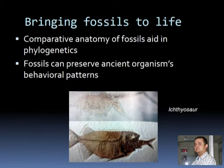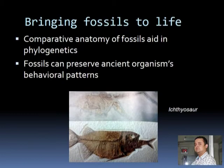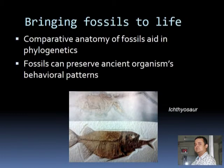Once you have a fossil, how do you analyze it and draw meaningful conclusions? You can do comparative anatomy — simply compare different features. A textbook example is the forelimb bone structure of mammals: comparing ulna, radius, and humerus across species to make conclusions and draw phylogenetic trees. Fossils can also preserve ancient behavioral patterns — for example, the ichthyosaur. Most reptiles are oviparous, but this particular fossil was fossilized right at the time of delivery, making it a direct proof that ichthyosaurs were viviparous. This suggests the common ancestor of reptiles and birds was viviparous.